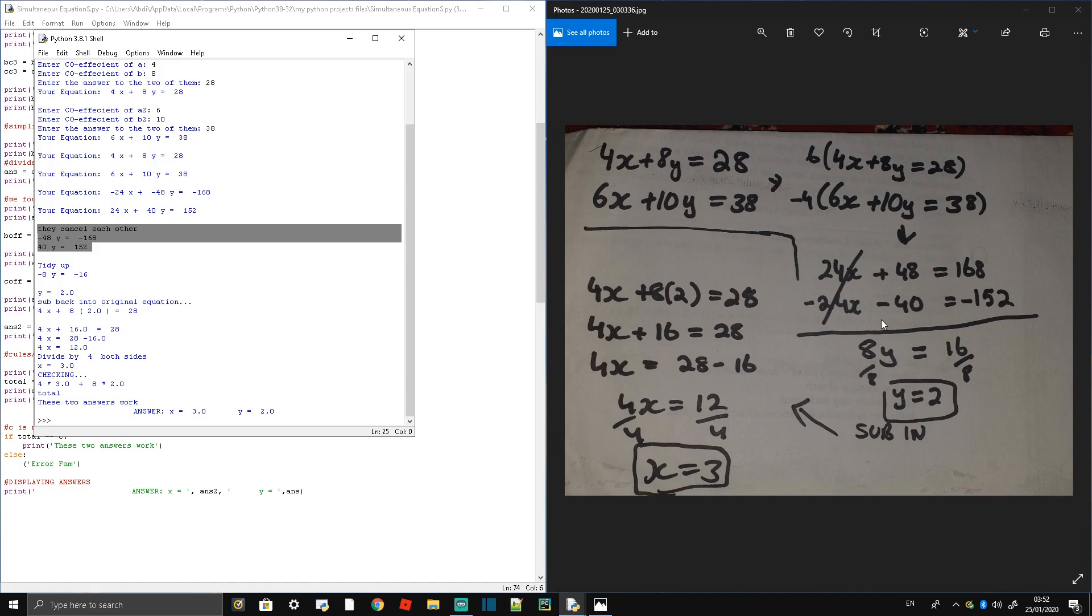The first part of the equation is almost done. Now we just need to print y equals 2, and we have our first value. Now to sub it back into the original equation, do the same thing, and just tidy it up.